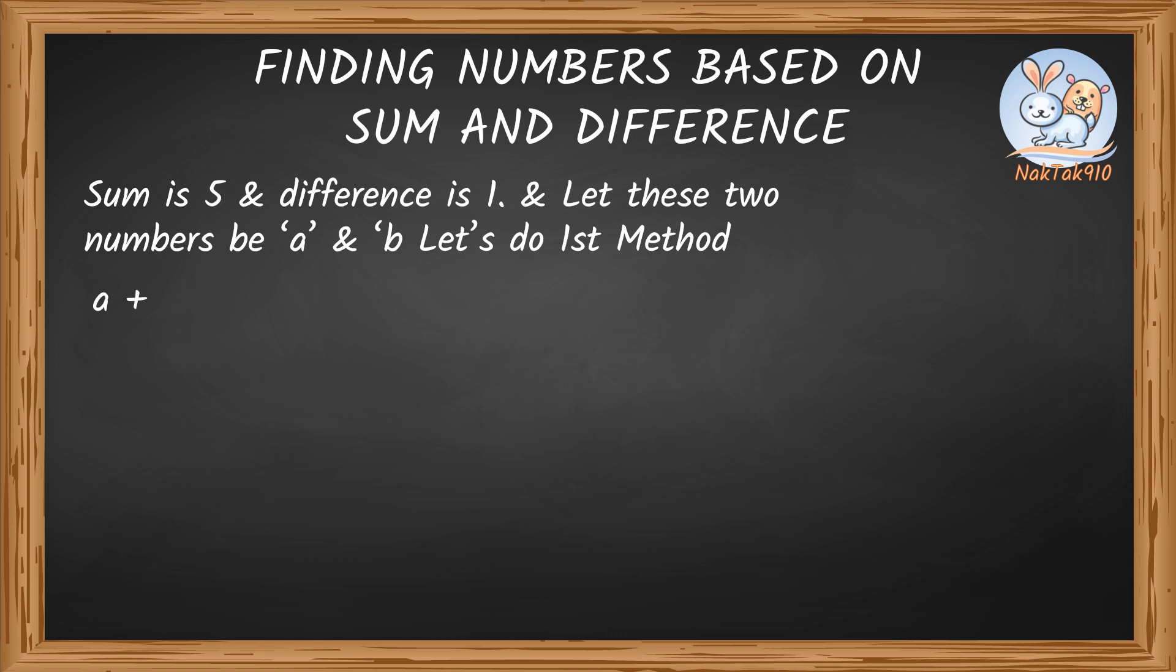Sum is 5. In equation, it would be a plus b equals 5. Difference is 1. In equation, it would be a minus b equals 1.